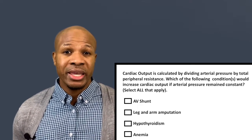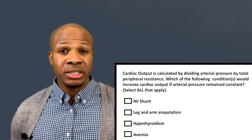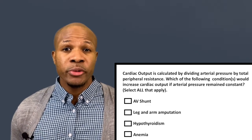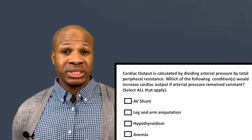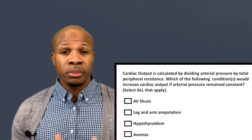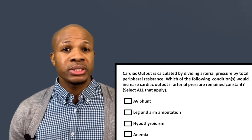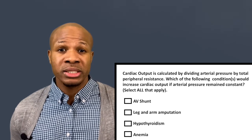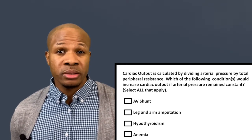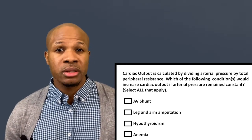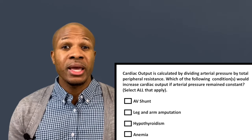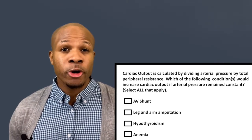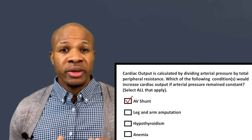Answer choice A says AV shunt. Because there's an AV shunt, there's a direct path between blood in the artery and blood in the veins. Resistance is something that makes it hard for blood to move from the arteries into the veins, but an AV shunt provides direct access from the arteries to the veins, so there's going to be less resistance to that flow.